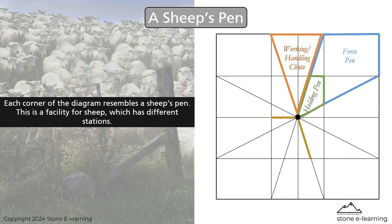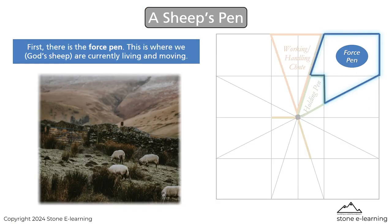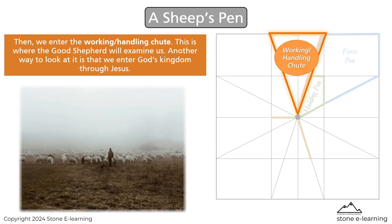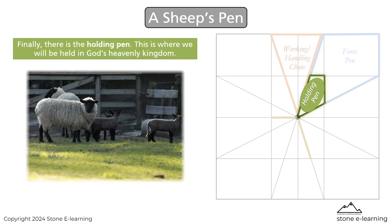Each corner of the diagram resembles a sheep's pen — a facility for sheep which has different stations. First, there is the force pen, where we, God's sheep, are currently living and moving. Then we enter the working, handling chute, where the Good Shepherd will examine us. Another way to look at it is that we enter God's kingdom through Jesus. Finally, there is the holding pen, where we will be held in God's heavenly kingdom.